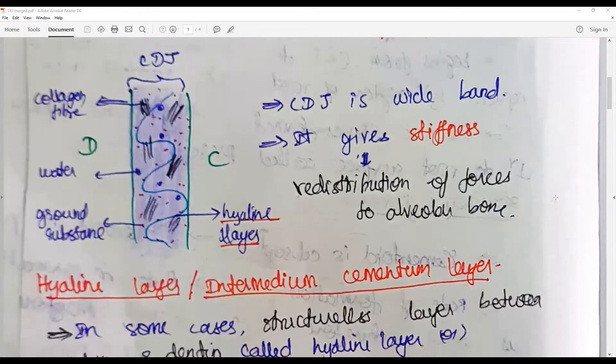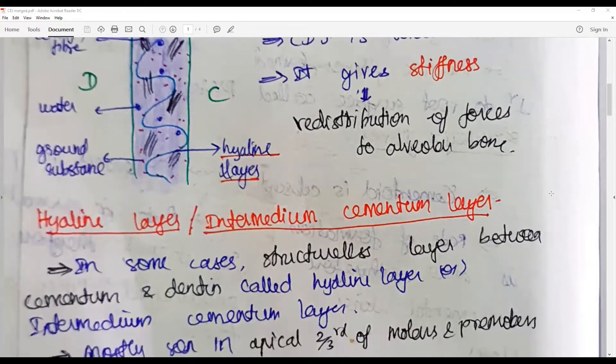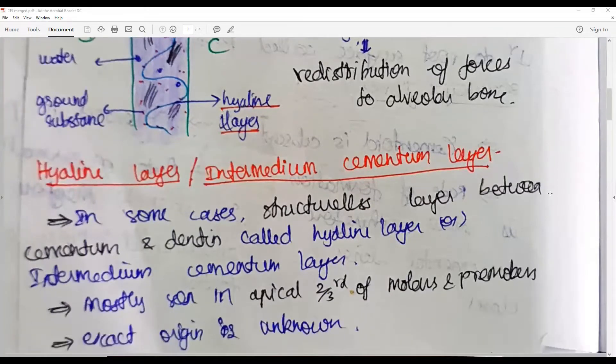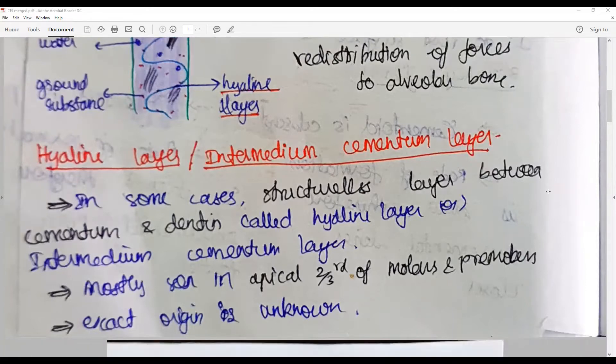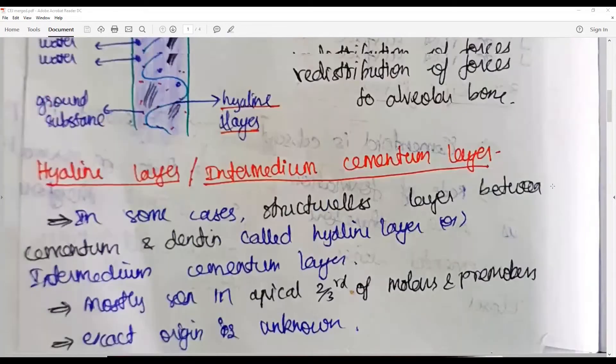There appears to be a thin layer of hyaline layer or intermediate cementum. These are structureless layers between cementum and dentine called hyaline layer or intermediate cementum layer, and are often seen in the apical two-thirds of molars and premolars. The exact origin and function is not still disputed and the existence is always challenged.